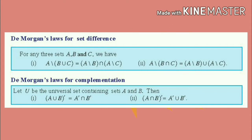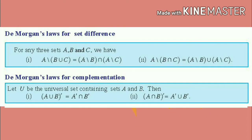The name of the first property is De Morgan's laws for set difference for union. The name of the second property is De Morgan's laws for set difference for intersection.